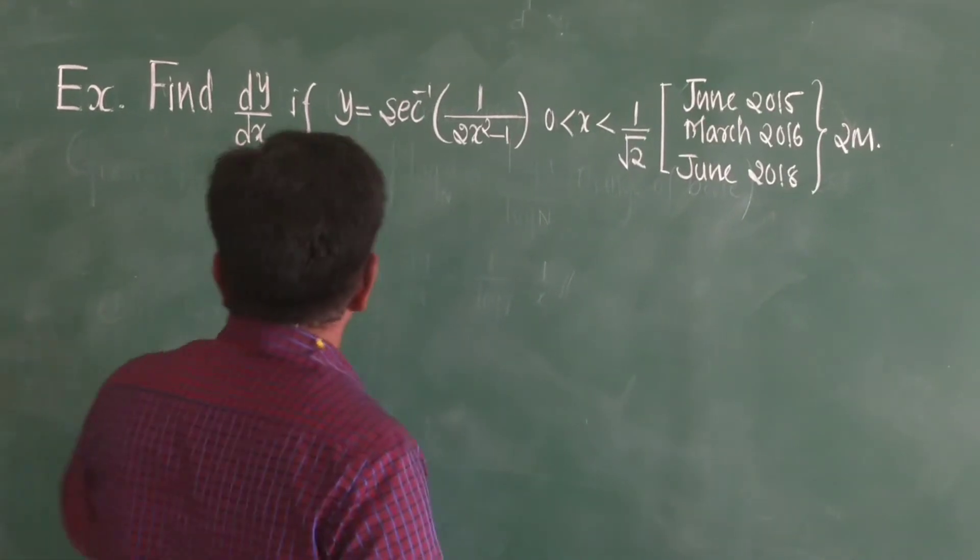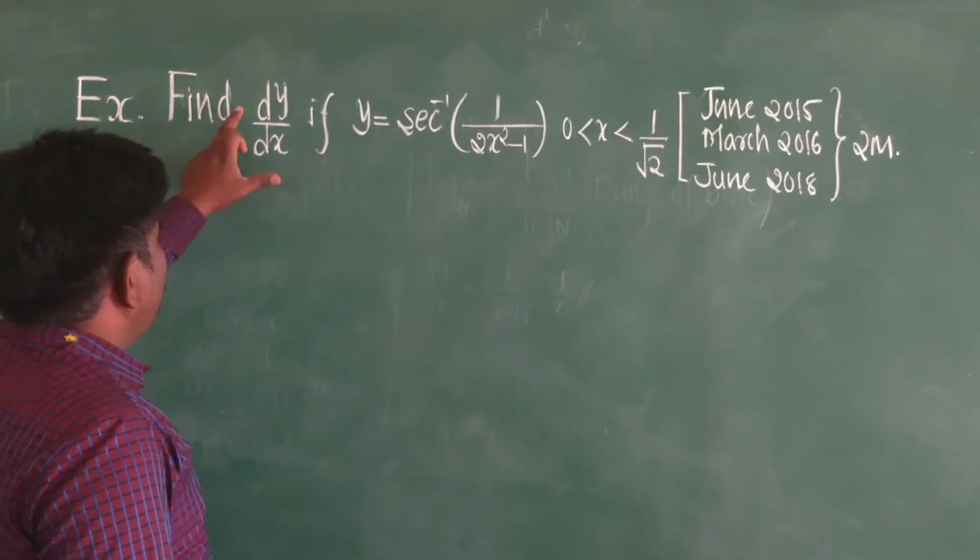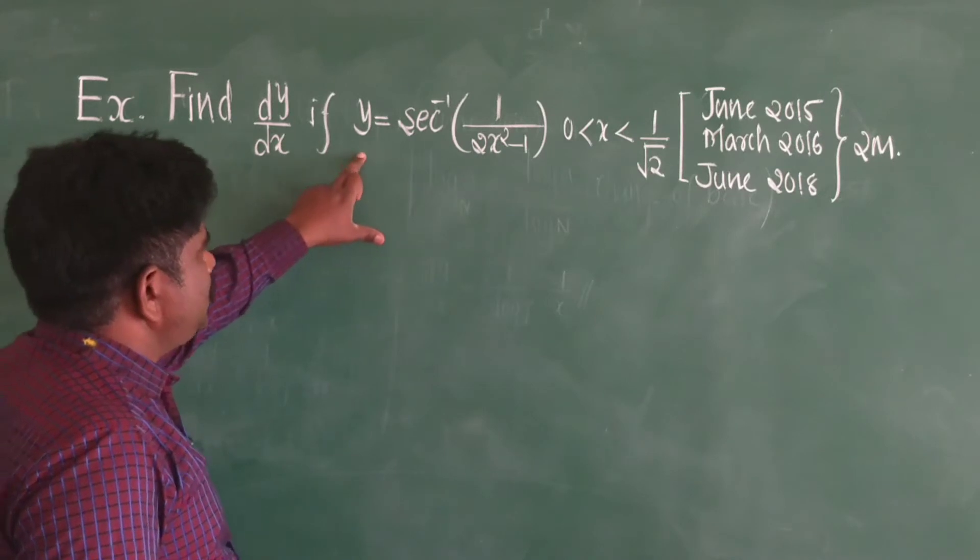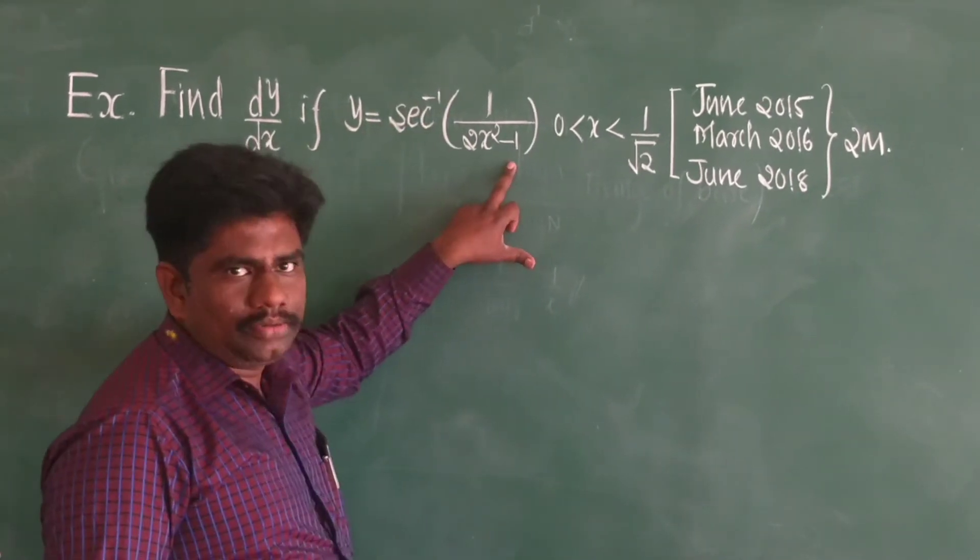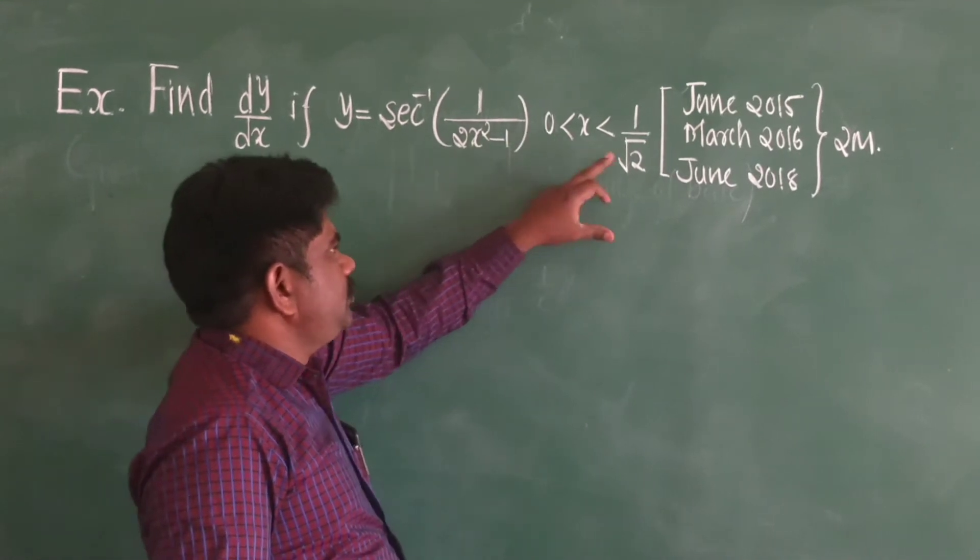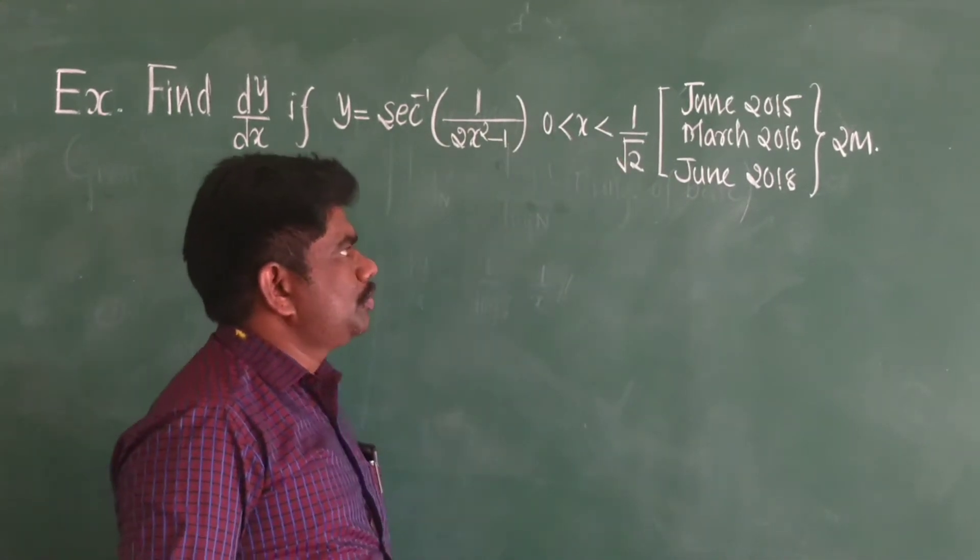Let us solve this question. Find dy/dx if y is equal to sec inverse of 1 upon 2x square minus 1, where x lies between 0 and 1 upon root 2.